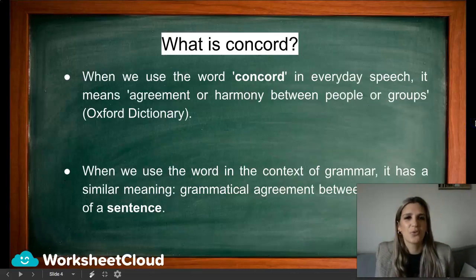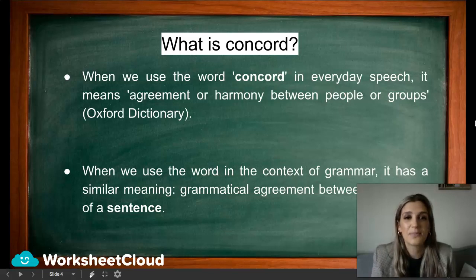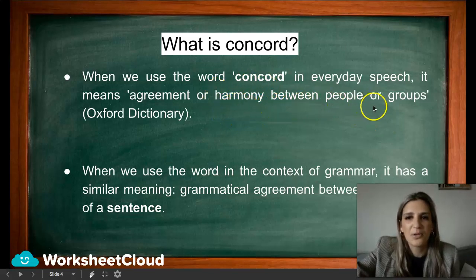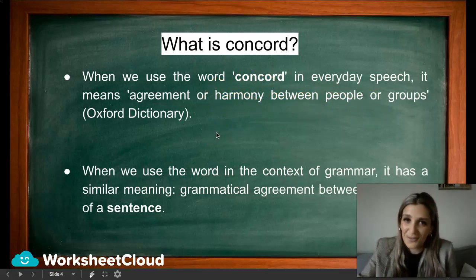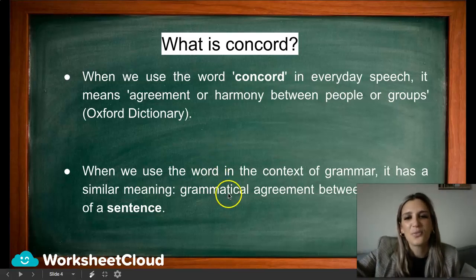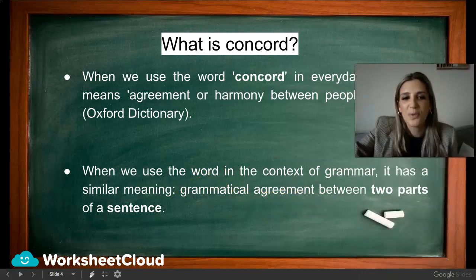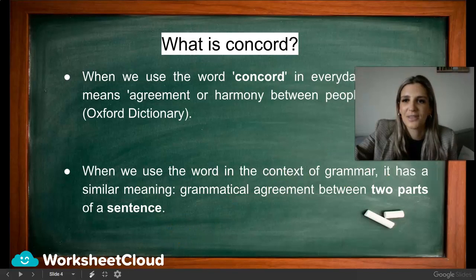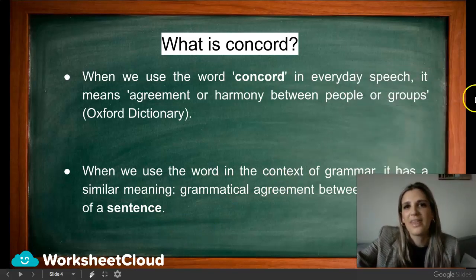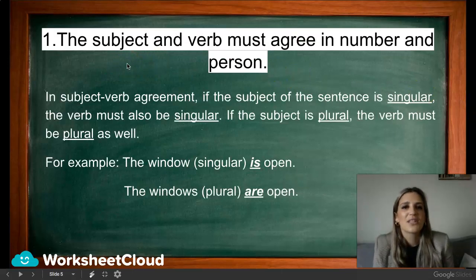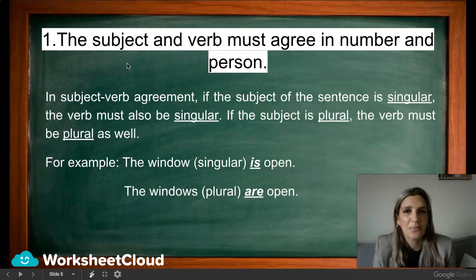Now, what is CONCORD? When we use the word CONCORD in everyday speech, it means agreement or harmony between people or groups — that's from the Oxford Dictionary. When we use the word in the context of grammar, it has a similar meaning: grammatical agreement between two parts of a sentence. So the Subject and Verb must agree.